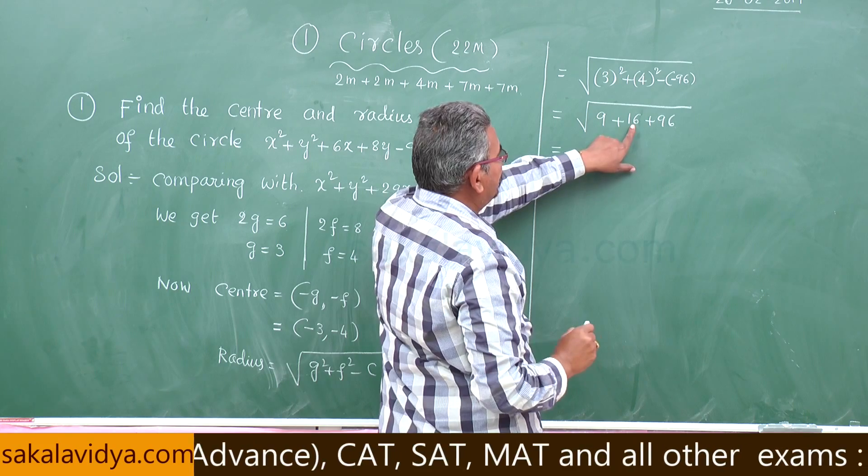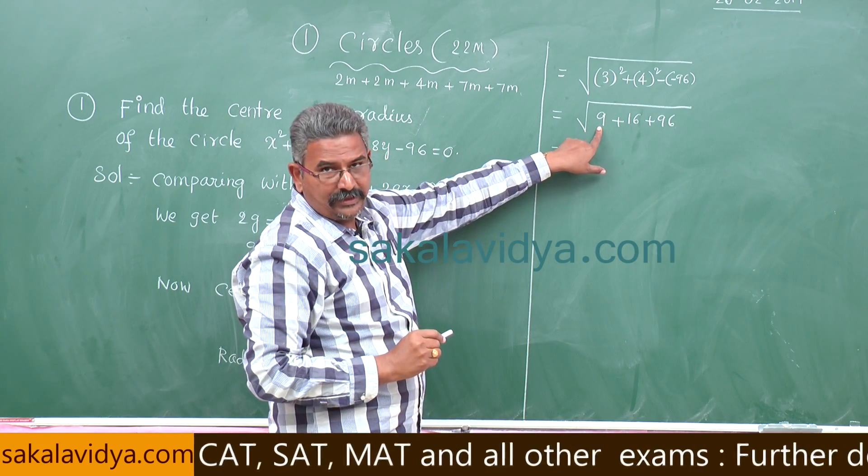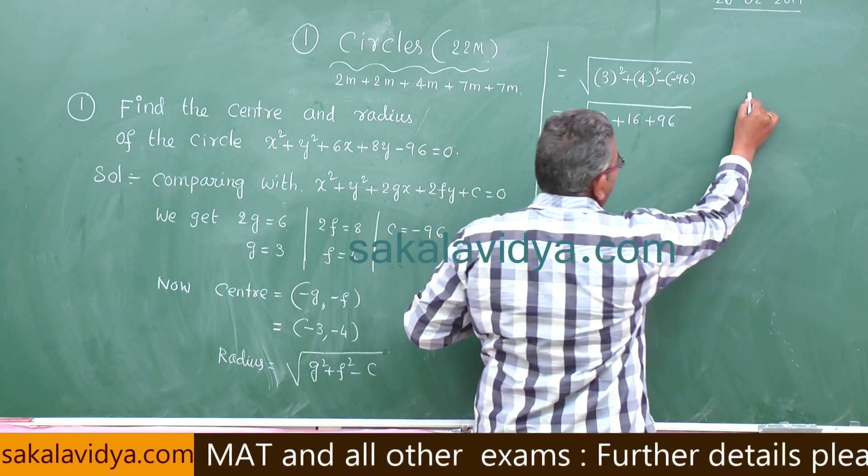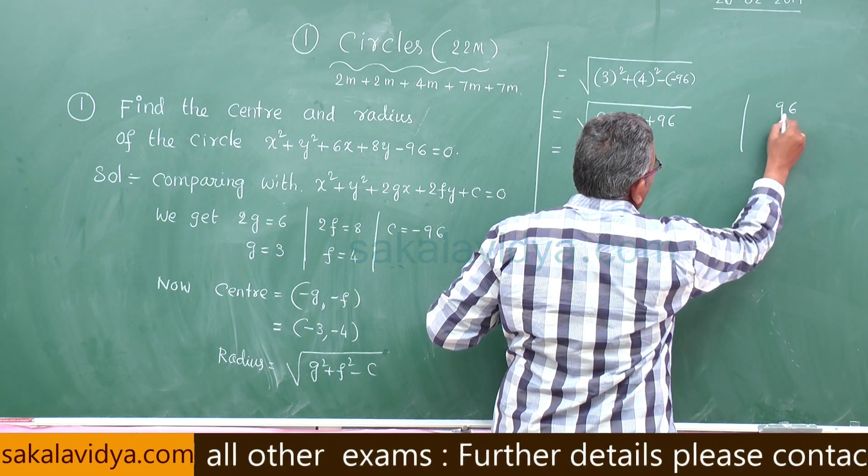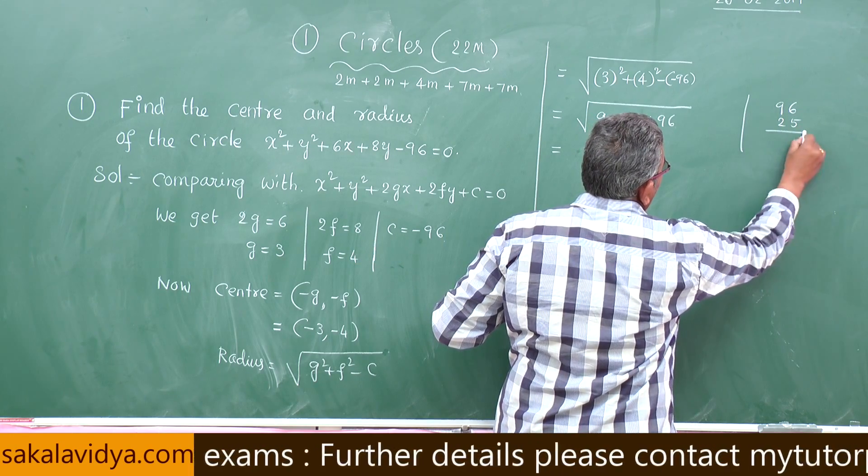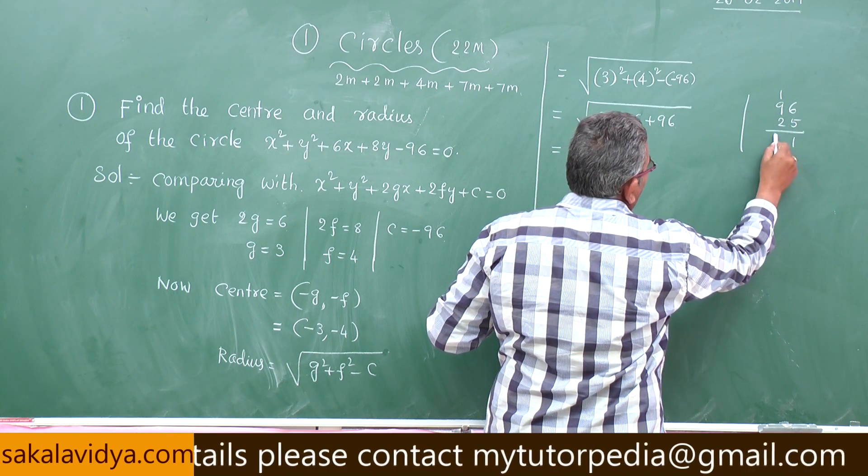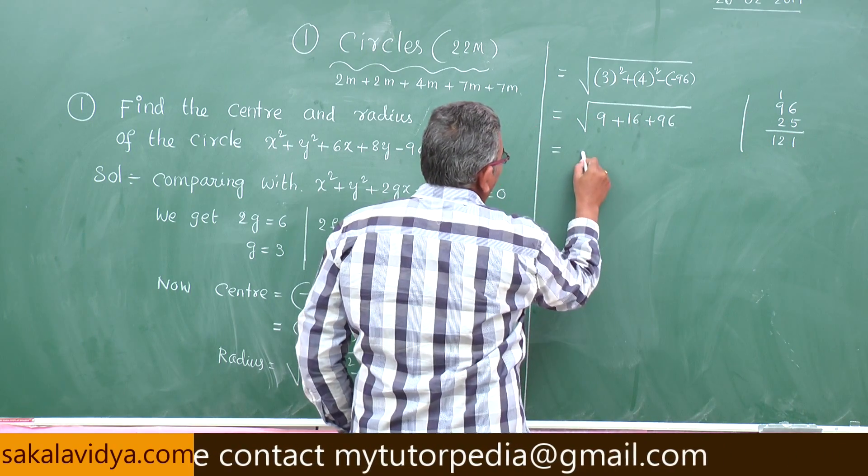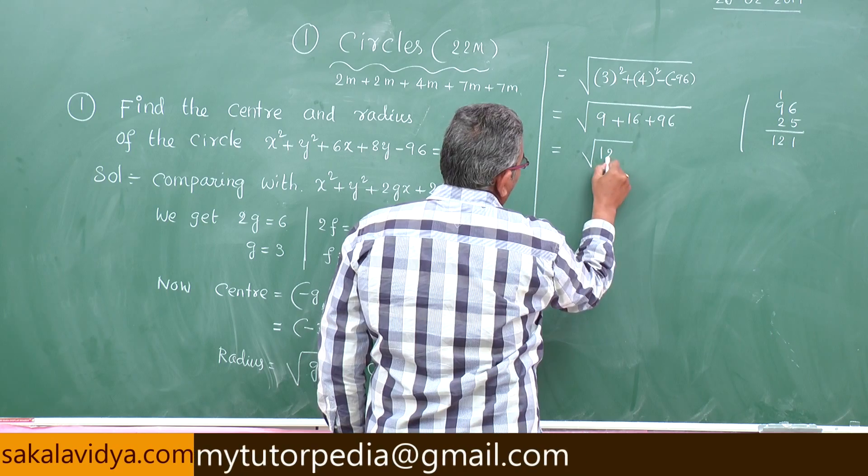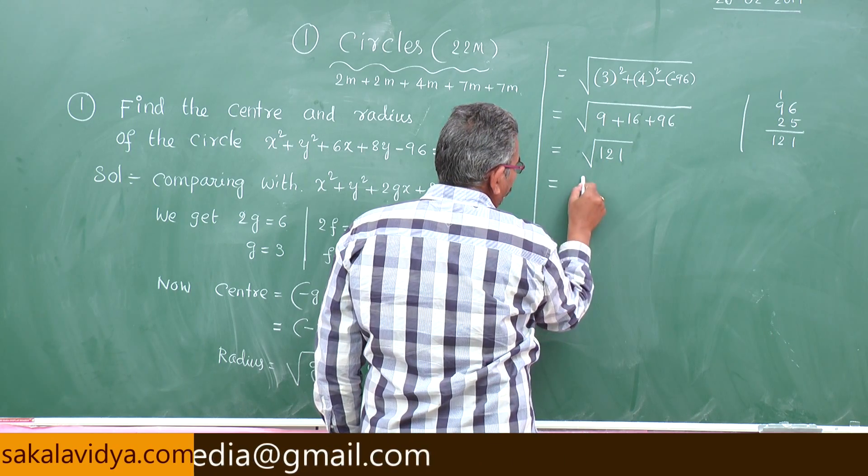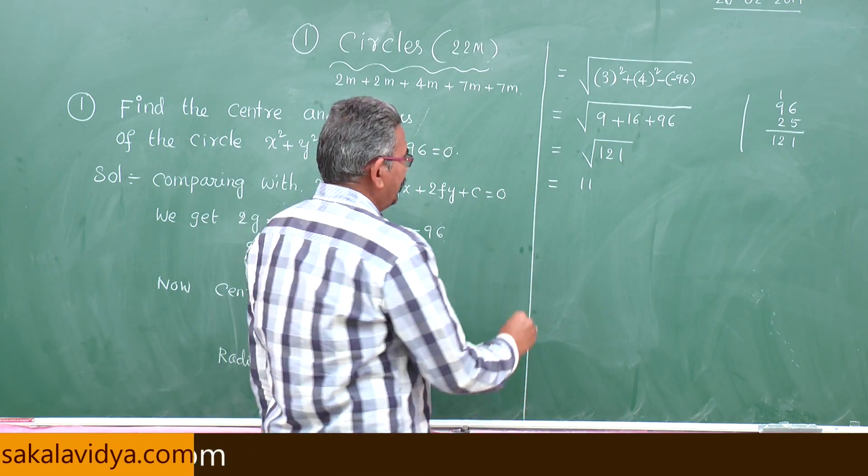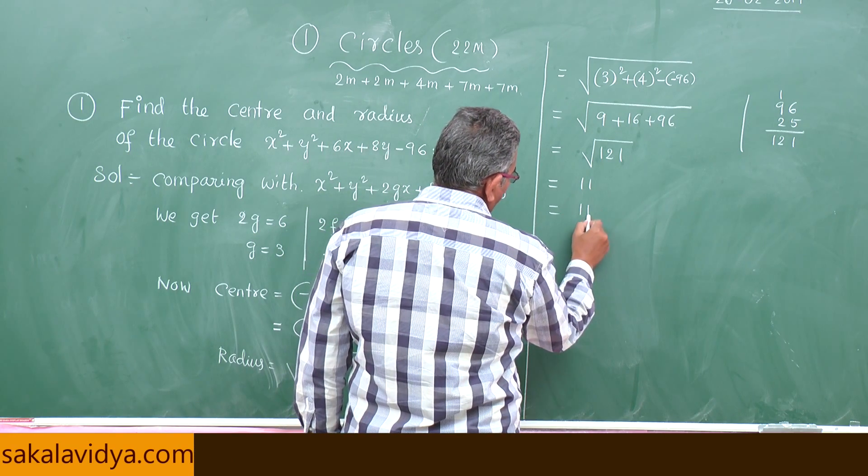16 plus 9 is 25, 25 plus 96. 96 added with 25, 11 carries 1, 10, 12, 121. Root of 121, what is the square root of 121? You know that is 11. That means this is 11 units.